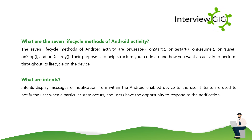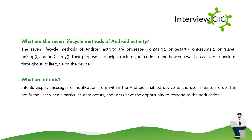What are the seven lifecycle methods of Android activity? The seven lifecycle methods are: onCreate, onStart, onRestart, onResume, onPause, onStop, and onDestroy. Their purpose is to help structure your code around how you want an activity to perform throughout its lifecycle on the device.